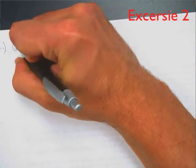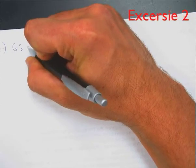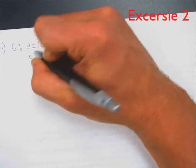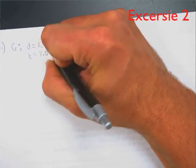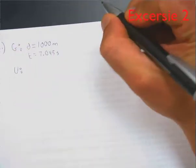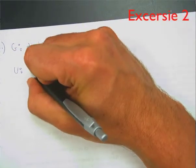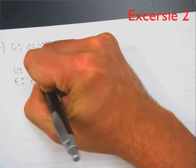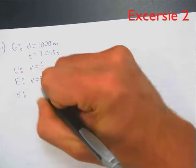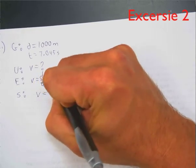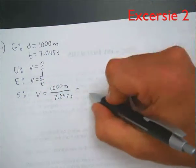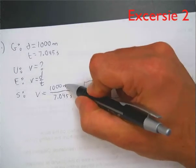For the next problem, we set up our givens: we have a distance of 1,000 meters and a time of 7.045 seconds. Our unknown is how fast the boat was moving — so speed equals question mark. Our equation is V equals D over T. We substitute: V equals 1,000 meters divided by 7.045 seconds, and then we get our answer in meters per second.